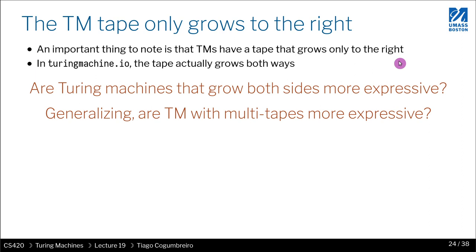So essentially, what you have in the Turing machine.io, you can think of it as having two tapes, whereas a regular Turing machine just has one. So is the Turing machine that is in the website Turing machine.io more expressive than the one Turing machine that we've been learning is a reasonable question to ask.